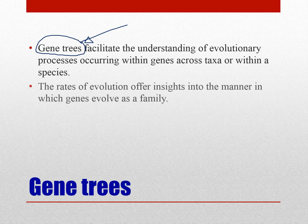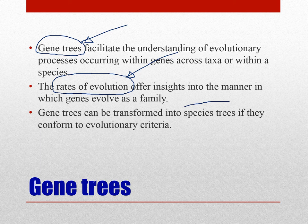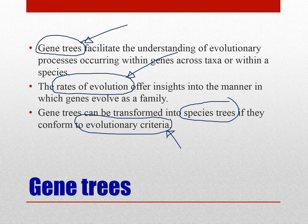There is something known as a molecular clock, or the rate of evolution, which differs between and within species. This evolutionary clock allows you to estimate the rate of evolution of a particular gene within a family. Gene trees can be transformed into species trees if they conform to evolutionary criteria. For example, if a gene is conserved within a particular species and robust enough to separate that species from others, you can convert that gene tree into a species tree. If there is too much variation of a gene within a species and it overlaps with others, you cannot use it for that conversion.